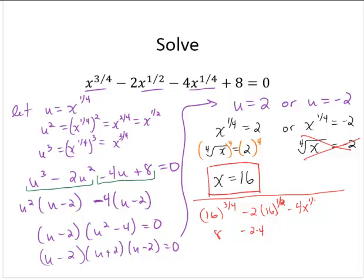Minus 4x to the 1/4. So that was 16 to the 1/4. This is 2 minus 4 times 2. And then plus 8. So we have 8 minus 8 minus 8 plus 8. That does equal 0. So we can be confident that 16 is the solution of the equation.